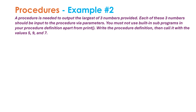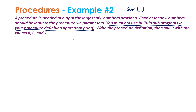We need a procedure to output the largest of three numbers provided. Each of the three numbers should be input to the procedure via parameters. You must not use built-in subprograms in your procedure definition apart from print. We need to write this definition then call it with the values 5, 9, and 7. This restriction is because they want you to do the work yourself — for example in Python you could use a built-in to do this easily, but they want you to write the longer code. Adding a third number adds more possibilities to consider.